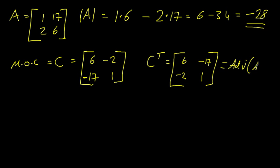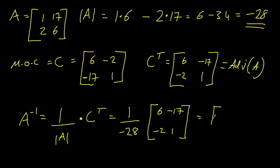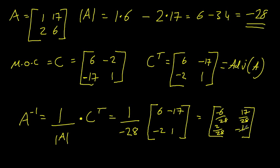The inverse of A — A to the minus one — is one over the determinant times the adjugate. One over minus twenty-eight is the same as minus one over twenty-eight. Multiplying each element by minus one over twenty-eight: minus six over twenty-eight; minus seventeen over minus twenty-eight is just seventeen over twenty-eight; minus two over minus twenty-eight simplifies to one over fourteen (since two and twenty-eight cancel); and minus one over twenty-eight. That is how to find the inverse of two-by-two matrices.